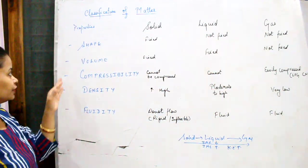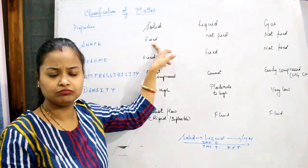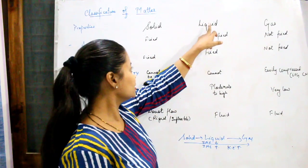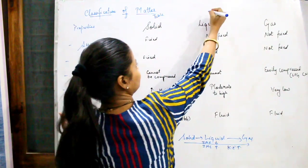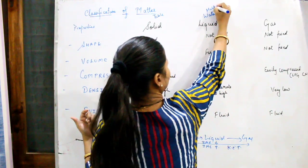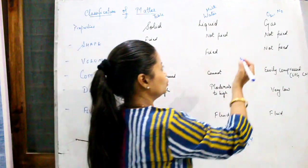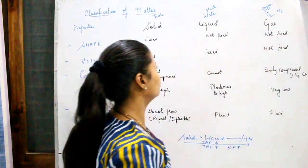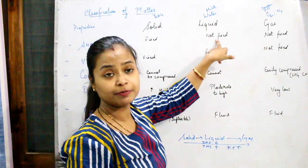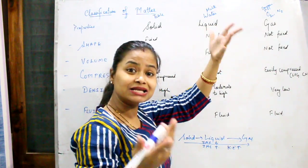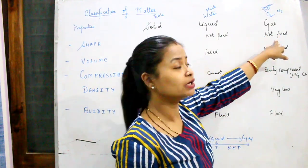The first property is shape. In case of solids, the shape is fixed — for example, a table. In case of liquids, the shape is not fixed — for example, water or milk — they take the shape of the container. Gases also have no fixed shape; they too take the shape of the container. The second property is volume. In case of solids, volume is fixed. In case of liquids, volume is also fixed — for example, 100 ml of water remains 100 ml whether kept in a glass or a bigger container; only the shape changes. Gases have no fixed volume.